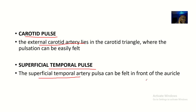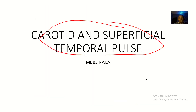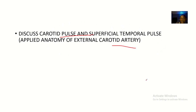You can feel the superficial temporal pulse very clearly right there. So that's it about these two types of pulse that are felt from the external carotid artery — one from the external carotid artery itself, and one from a branch of the external carotid artery.